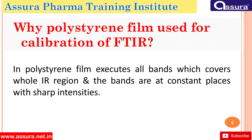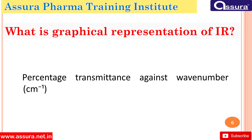Next, why is polystyrene film used for calibration of FTIR? Polystyrene film exhibits all bands which cover the whole IR region, and these bands are at constant positions with sharp intensities. Next, what is the graphical representation of IR? The graphical representation of IR is percentage transmittance plotted against wavenumber.